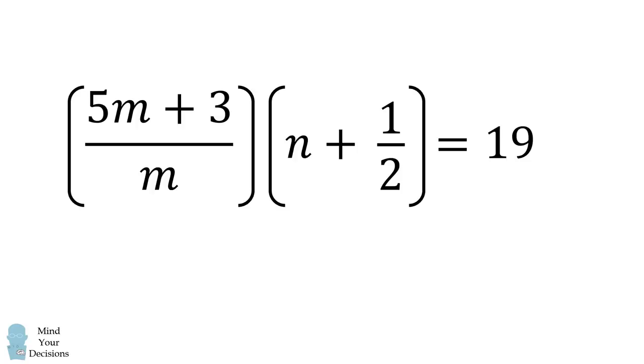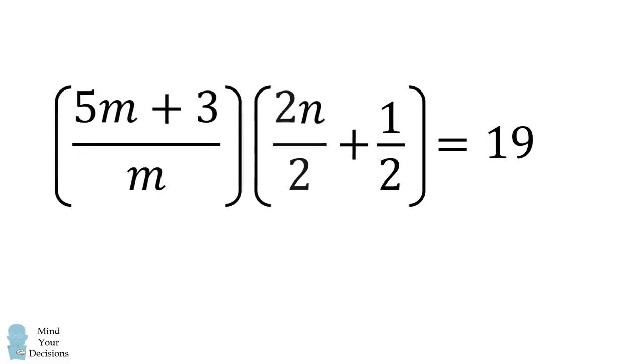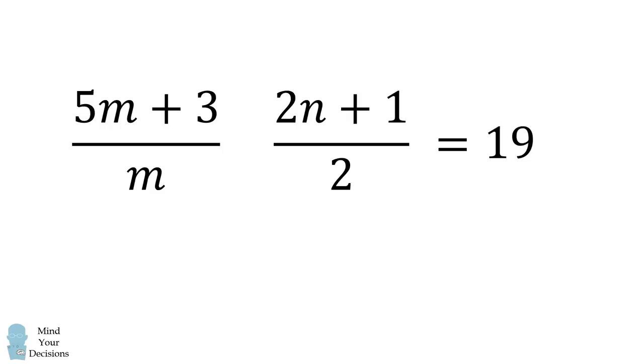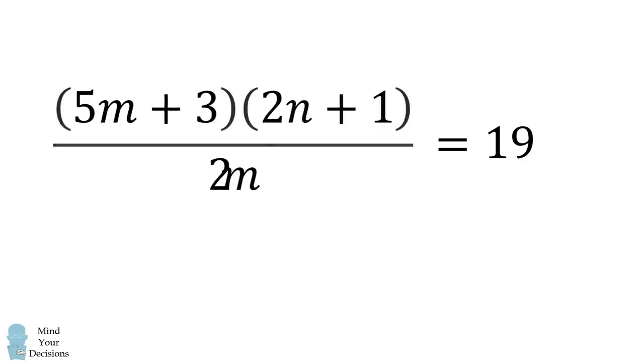Now let's rewrite the second term in this product. n is equal to 2n over 2, which means the second term in the product is equal to 2n plus 1 all over 2. Since we are multiplying these fractions, the denominator becomes 2 multiplied by m.